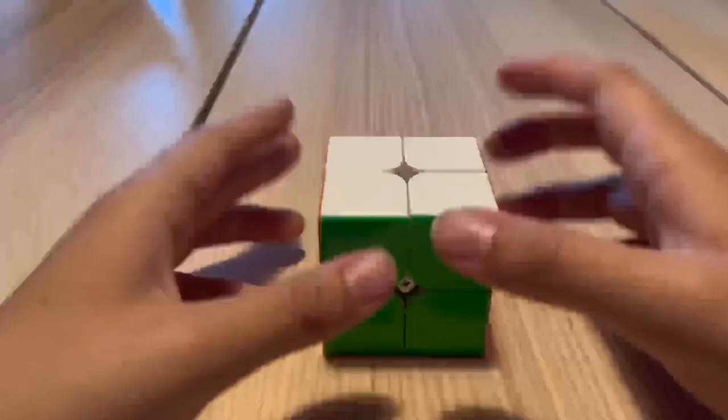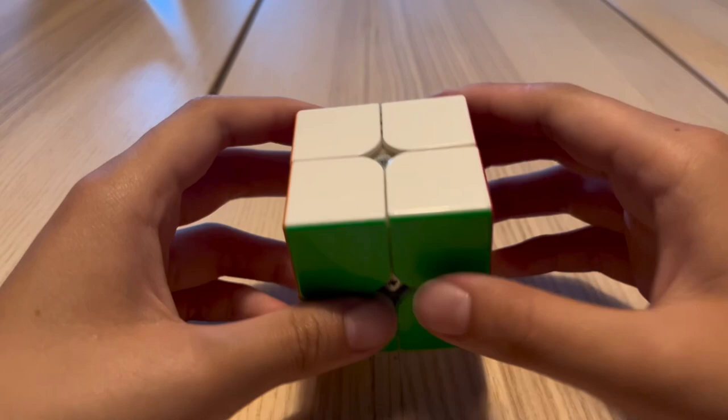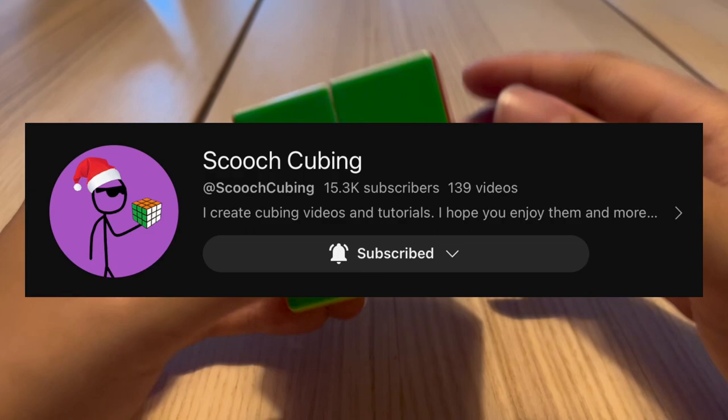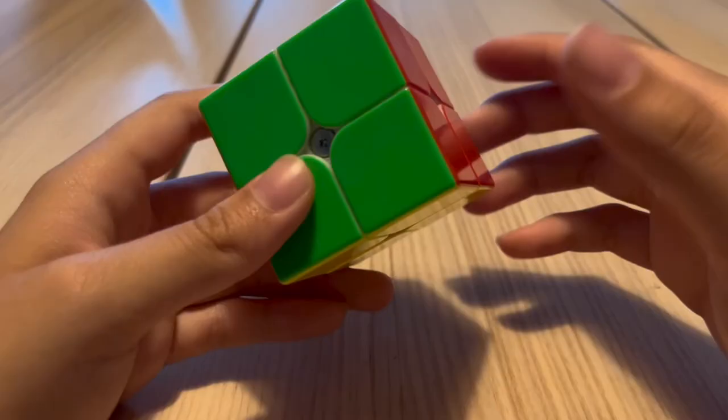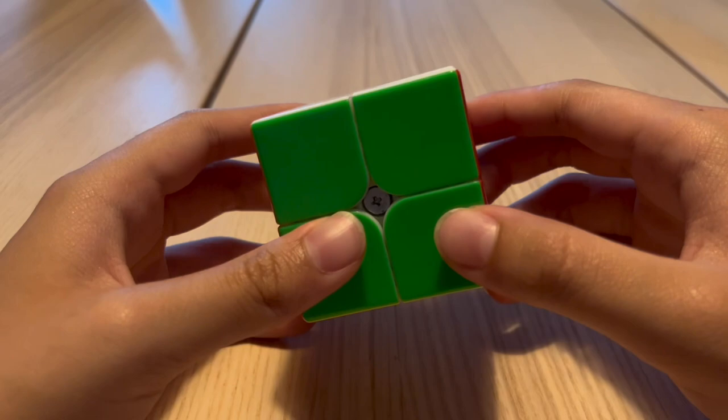Now I'm going to be reconstructing Zayn Kanani's 1.08 world record fail average, 0.97 without the plus 2. I want to thank Scooch Cubing for the reconstructions he put up on 2x2 solvers. I believe Zayn used the GAN 251M Pro, which is pretty cool because he used to use the Volk, so he switched mains. Anyways, I'm going to be using the MGC Elite to reconstruct, let's begin.